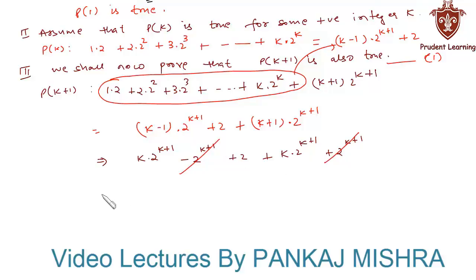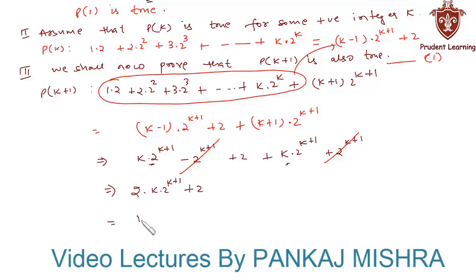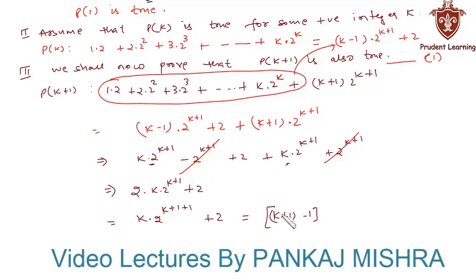The −2^(k+1) and +2^(k+1) terms cancel each other. We are left with two copies of k·2^(k+1), giving 2k·2^(k+1) + 2, which equals k·2^(k+2) + 2. Writing k as (k+1)−1, this becomes ((k+1)−1)·2^((k+1)+1) + 2, which is exactly the form of P(k+1). Thus P(k+1) is true whenever P(k) is true.